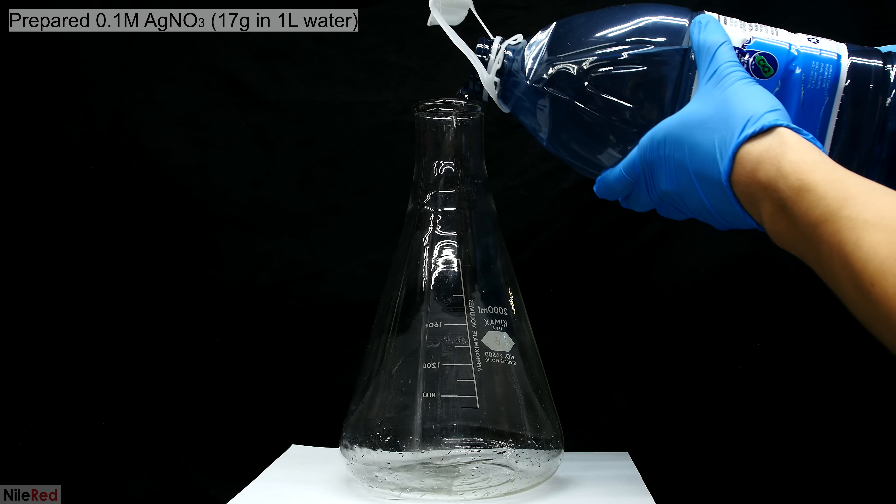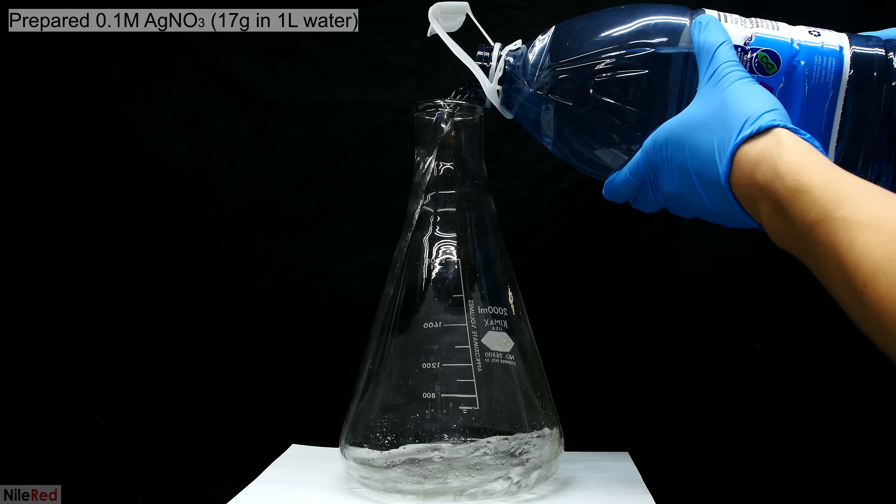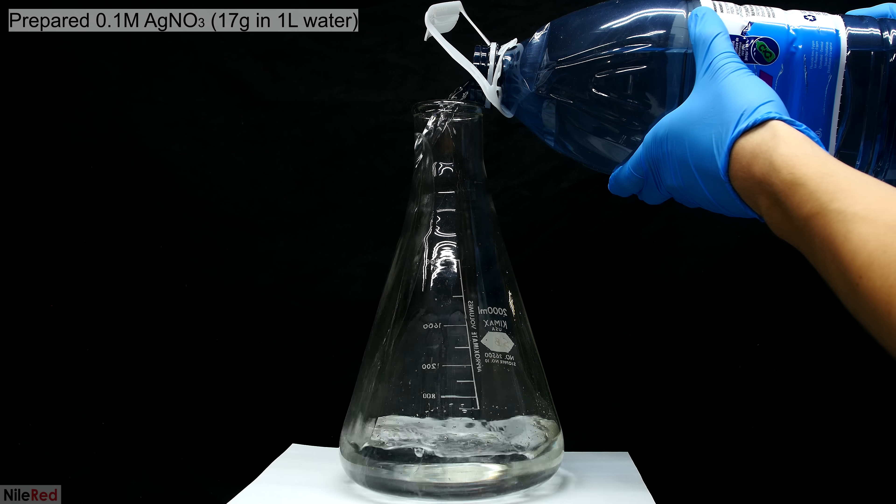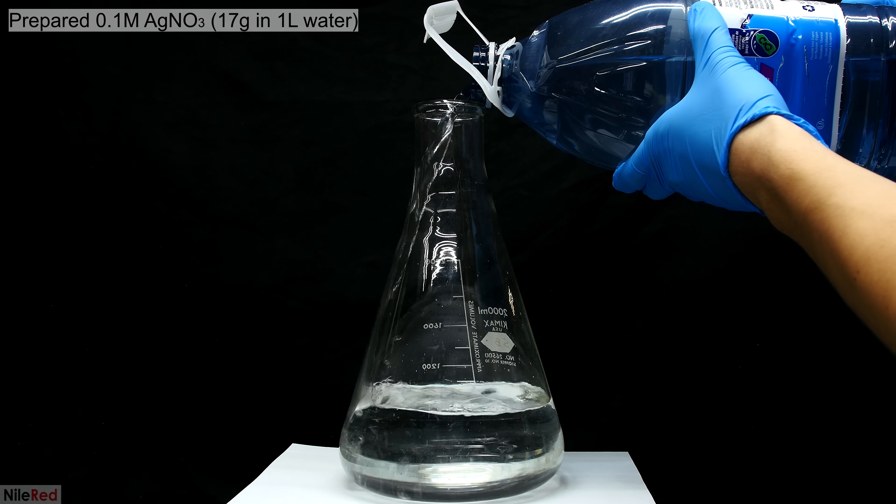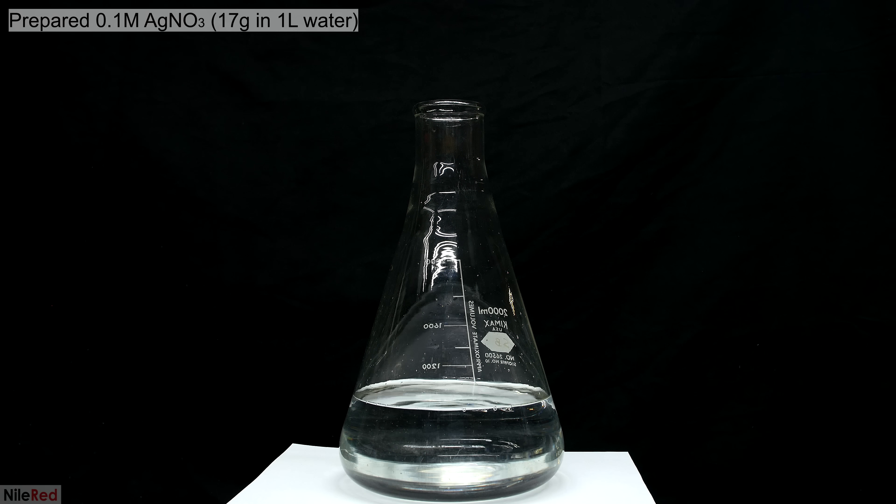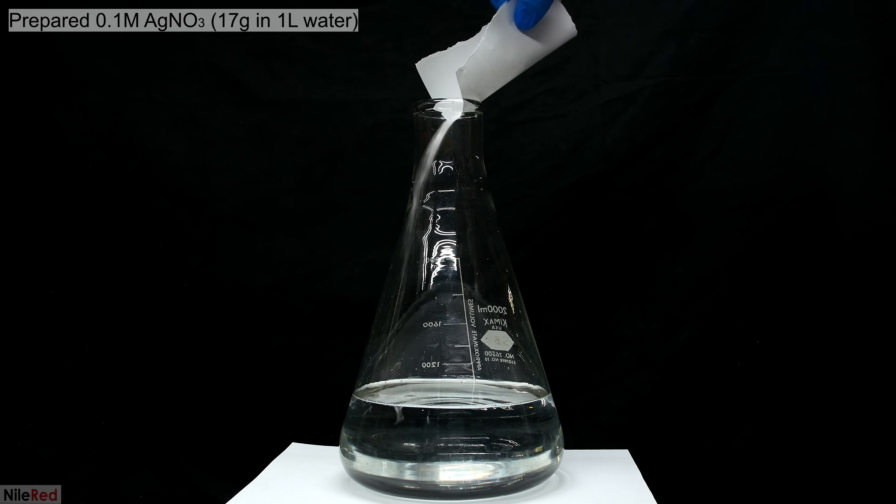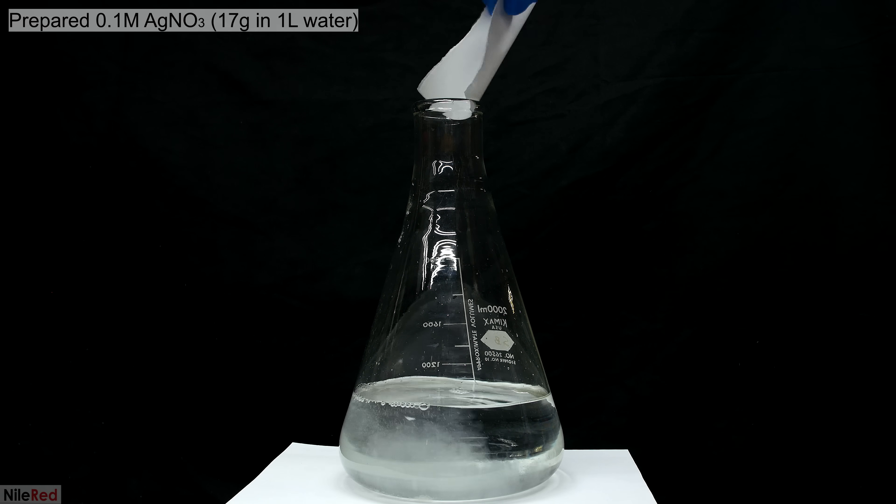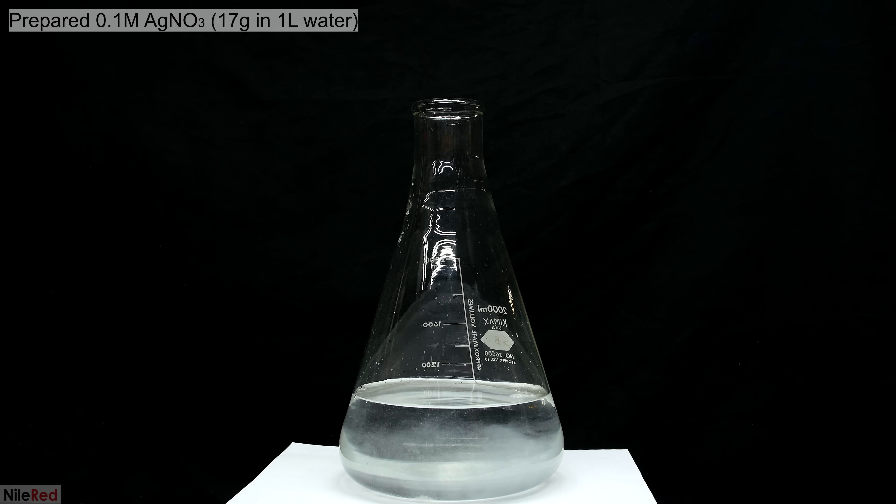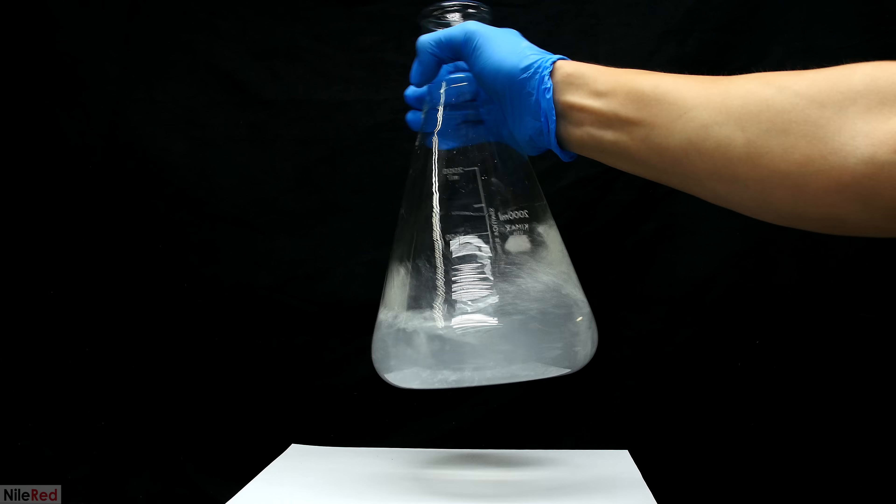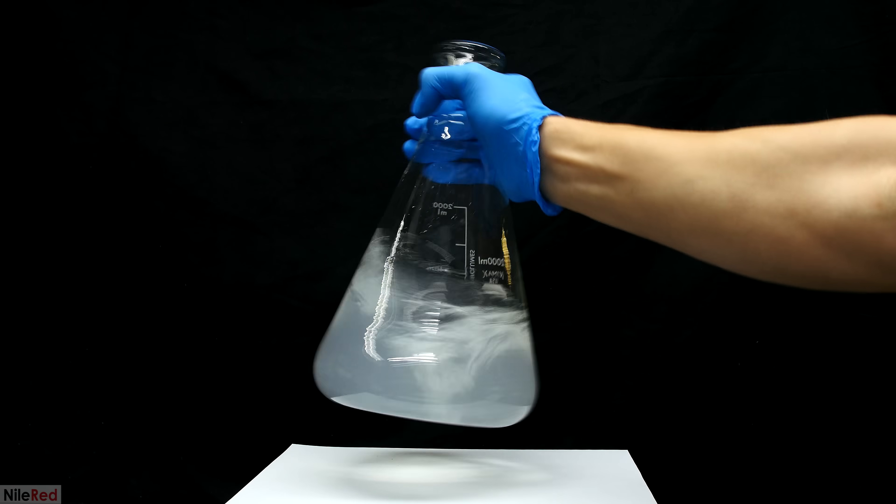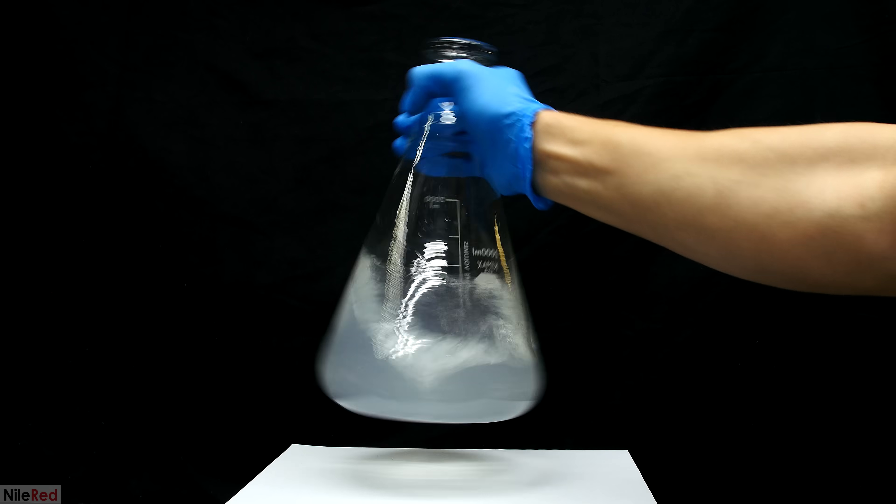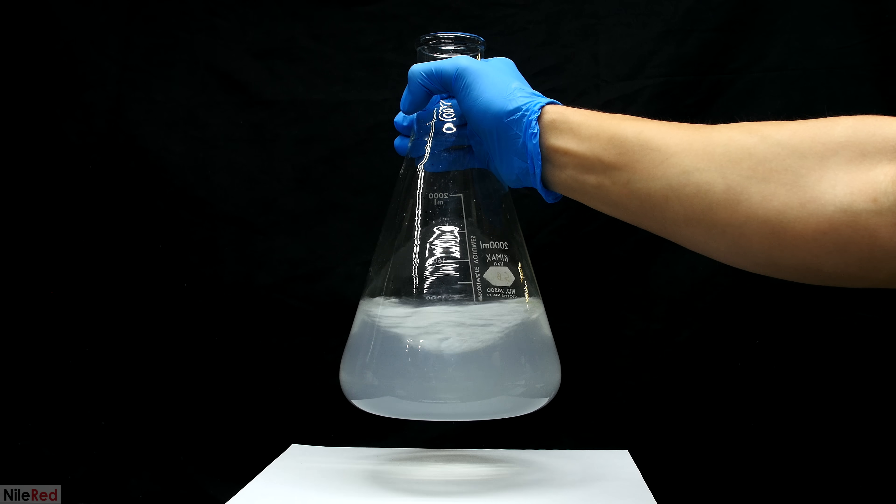The first thing that we need to do is make one liter of 0.1 molar silver nitrate solution. This just means we have 0.1 moles of silver nitrate dissolved in one liter of water. One mole of silver nitrate is about 170 grams, so 0.1 moles is about 17. I then manually mix it to get the silver nitrate to dissolve. Silver nitrate is very soluble in water, so after mixing for several seconds, it should all dissolve.